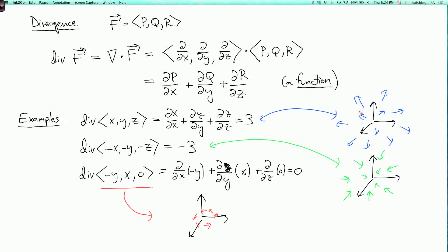So here the divergence is positive and it looks like it's exploding. Here the divergence is negative and it looks like it's contracting. And here the divergence is zero and it looks like it's rotating.